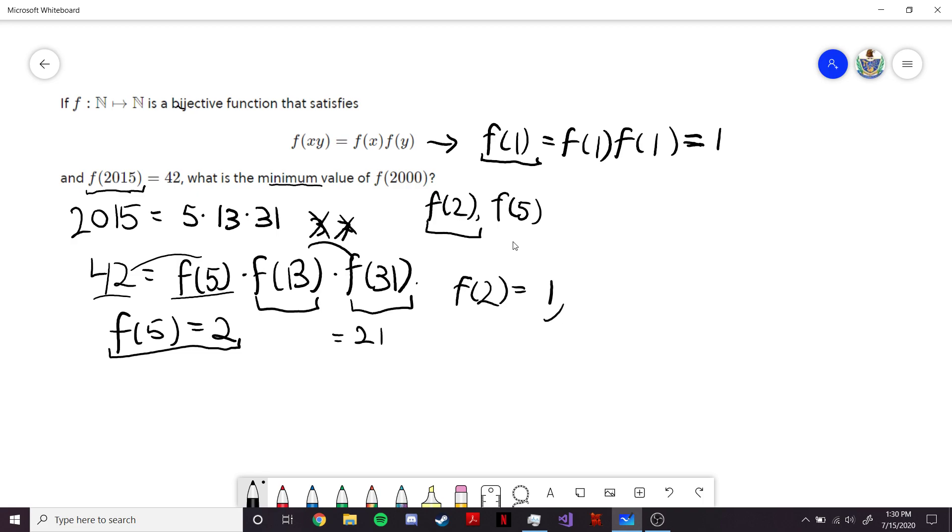So, if we're looking at what f(2) can be, we know it can't be 1, and it can't be 2, because 1 and 5 already map to it. And it can't be 3, because either 13 or 31 maps to it.